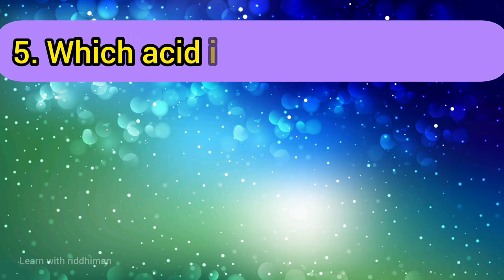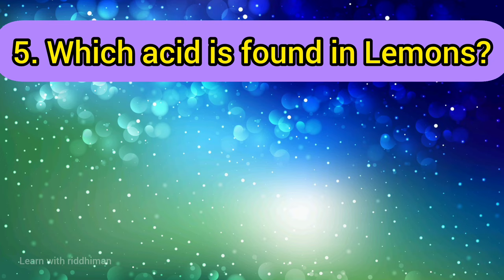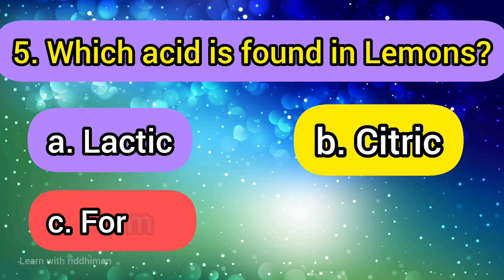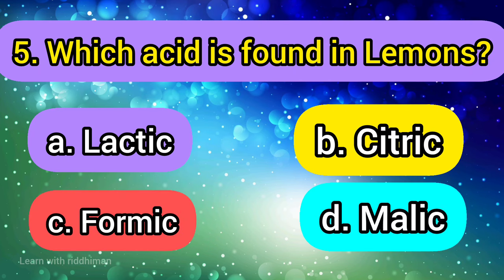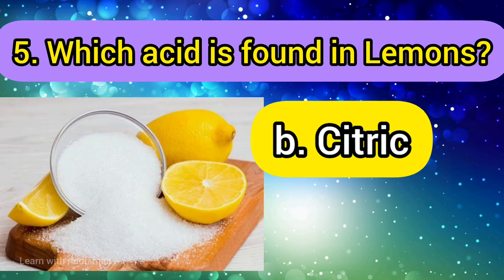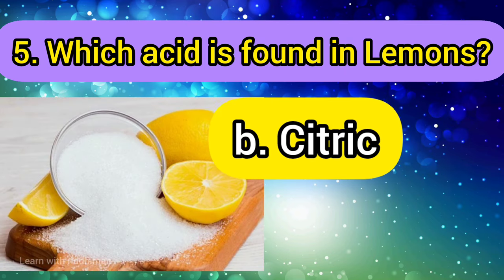Which acid is found in lemons? Lactic, citric, formic, malic. Answer is citric.